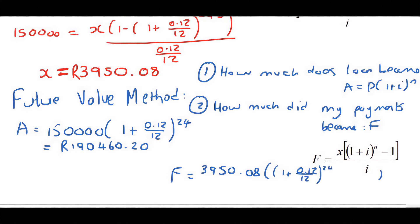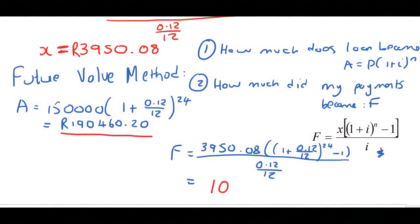And then the interest rate we said was 12% over 12. For two years, that's 24 over 0.12 over 12. And that's going to give 106,547.34 Rand.